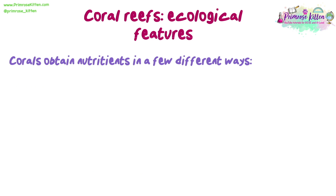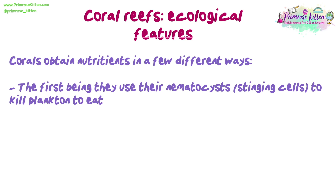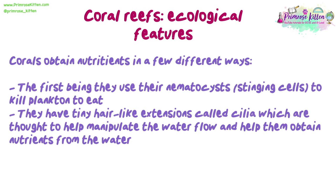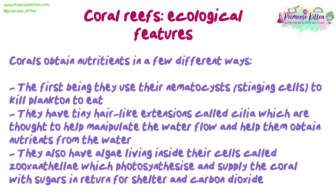Corals obtain nutrients in a few different ways. The first being they use their nematocysts to kill plankton to eat. They have tiny hair-like extensions called cilia, which are thought to help manipulate the water flow and help them obtain nutrients from the water. They also have algae living inside their cells called zooxanthellae, which photosynthesise and supply the coral with sugars in return for shelter and carbon dioxide.